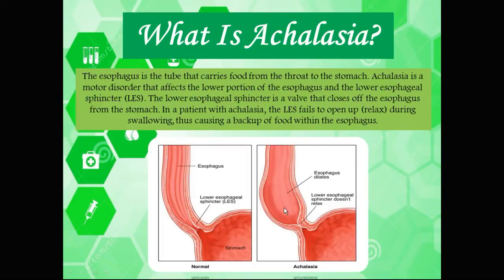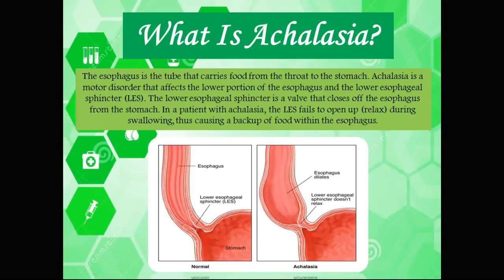In achalasia, solids and liquids accumulate and hover in the lower esophageal body. Usually in patients with dysphagia, liquids pass much easier because they're softer. In achalasia, however, liquids come down and sit there — they are not strong enough to push open the lower esophageal sphincter. But solid food has the ability to push the sphincter open, allowing food to pass more freely from the esophagus into the stomach. That is why patients with achalasia have this paradoxical dysphagia.